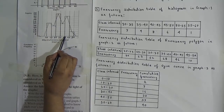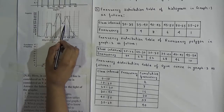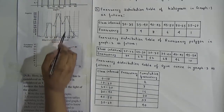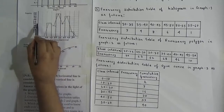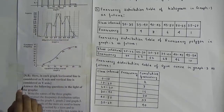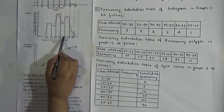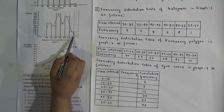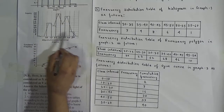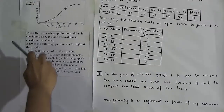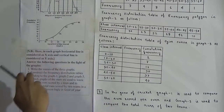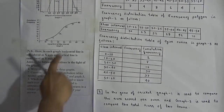The frequency of class interval 35–40 is approximately 28, as the column is down to around 30. The frequency of class interval 40–45 is 45, and the frequency of class interval 45–50 is 10. Now we will make the frequency distribution table of the ogive curve.